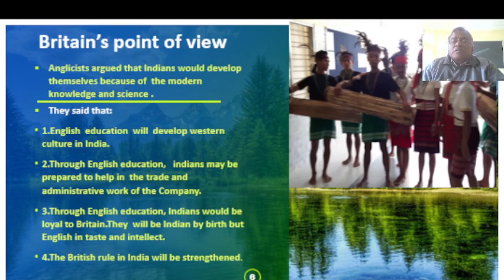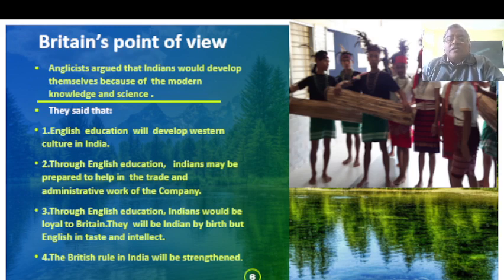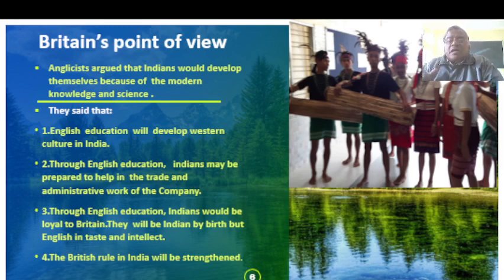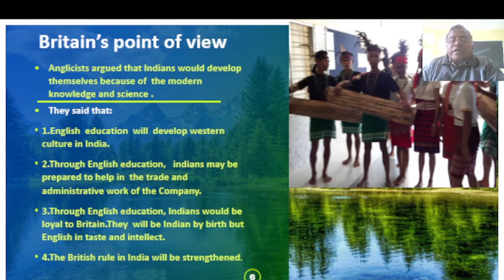The Anglicist position argued that Indians would develop themselves through modern knowledge and science, and that English education would develop Western culture in India. Through English education, Indians could be prepared to help in the trade and administrative work of the company, and would be loyal to Britain. They would be Indian by birth but English in taste and intellect, and the British rule in India would be strengthened.